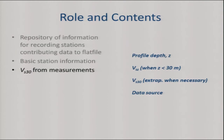We have VS30 from measurements. About 25 to 30 percent of our stations have velocities from measurements, which is comparable to the percentage we had before. But we have a lot more stations than before, so there are actually many more VS30s from measurements now than there were previously.